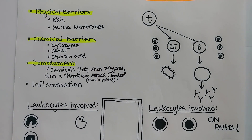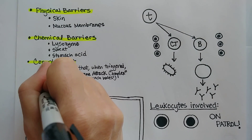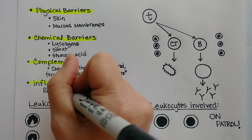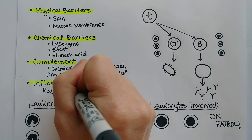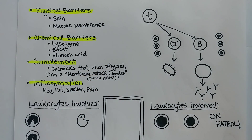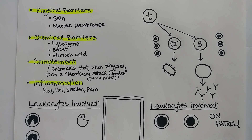Inflammation has cardinal symptoms: the inflamed area is red because of increased blood flow, hot because of increased blood flow, swollen because of increased blood flow, and painful because pain receptors in the area are both stretched and become more sensitized. All of these symptoms relate to blood vessels becoming more leaky so the area has more blood flow, which contributes to fighting the overall infection.